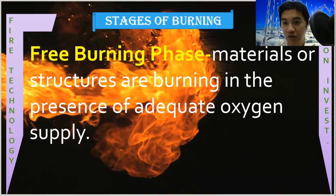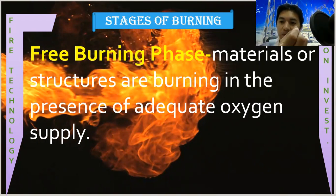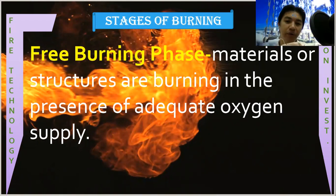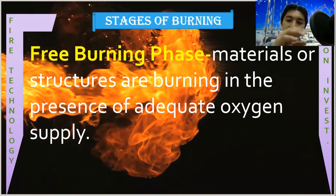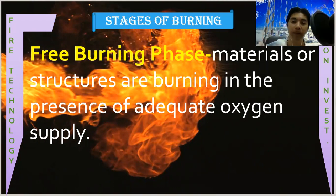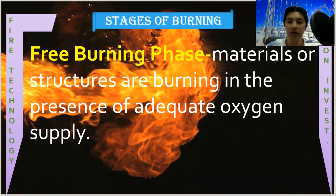The area is fully involved. In the incipient phase you may have only been burning a piece of wood, but in the free burning phase it is already consuming the other objects. When the temperature increases sufficiently and reaches the flash point, the objects nearby where the fire originated are already affected or consumed — that is already the stage of free burning.